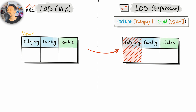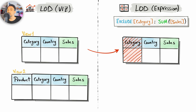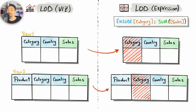Tableau will do the aggregations depending on the remaining dimension. The EXCLUDE function will always remove the dimension specified in the calculation. The big difference between EXCLUDE and FIXED is that EXCLUDE depends on the dimensions in the view. If we add another dimension like product, Tableau will take all those dimensions and only exclude category, making the calculation depend on product and country. So EXCLUDE is very dynamic — it reacts to the dimensions in the view and removes the ones we specify.